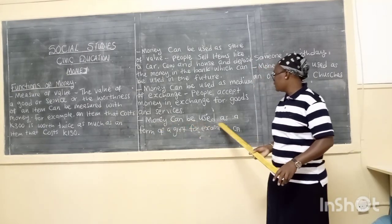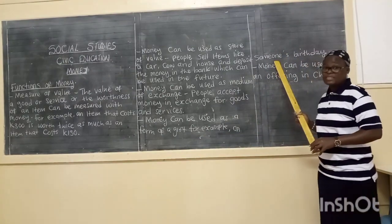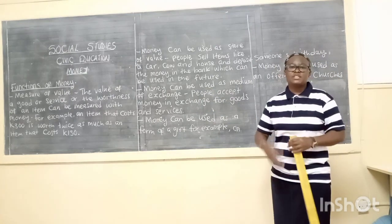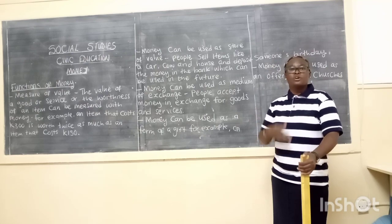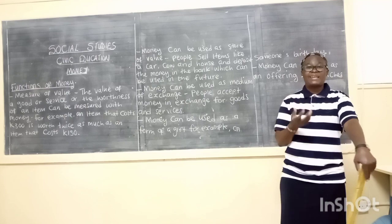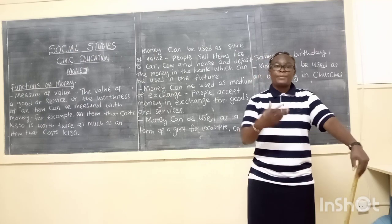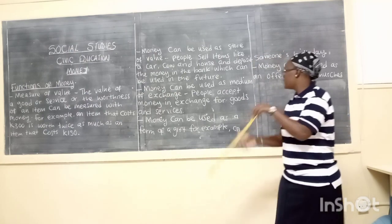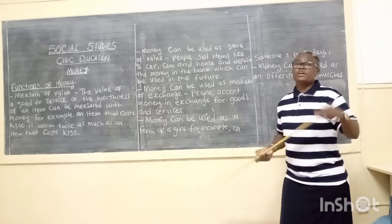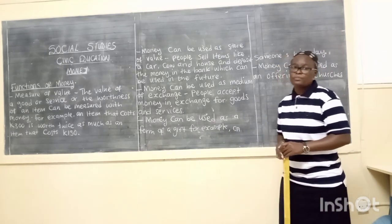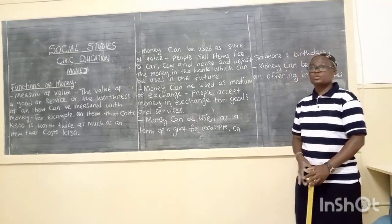Money can also be used as a form of a gift. For example, when it is somebody's birthday, somebody gives you 50 kwacha to appreciate that you have added another year to your life. Or maybe you passed very well in grade 8 and your parents give you money as a gift. Or maybe it is somebody's wedding and they say bring a gift in monetary form — you take them 200 kwacha or 500 kwacha. That is a gift, so money can also be used as a gift.